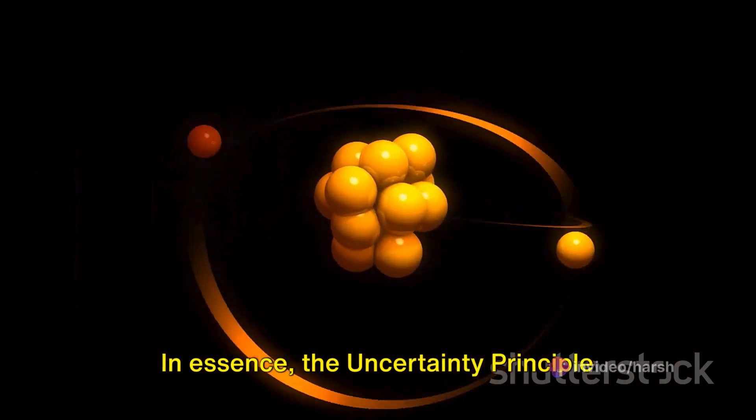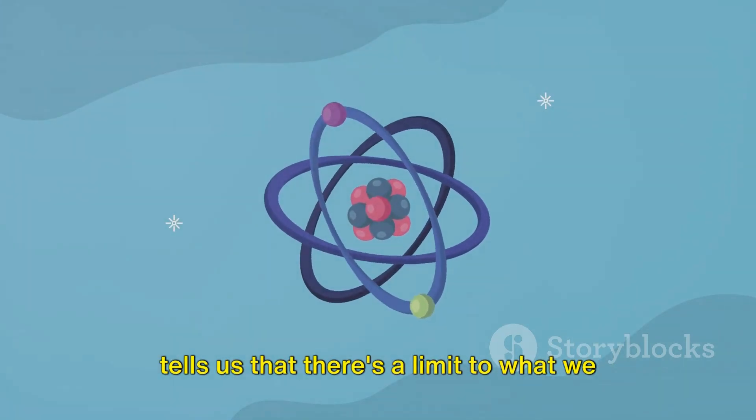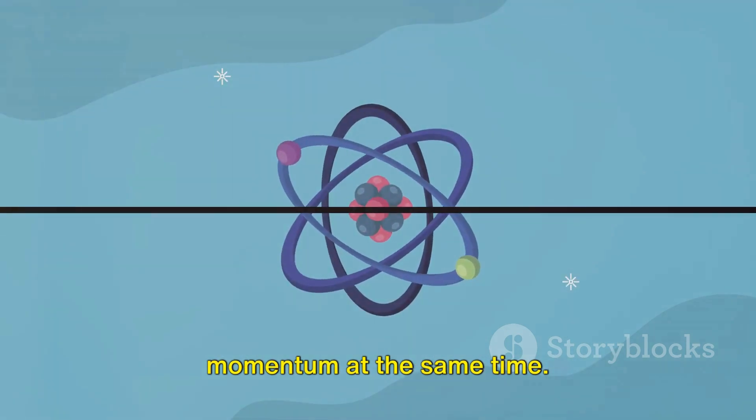In essence, the uncertainty principle tells us that there's a limit to what we can know about a particle's position and momentum at the same time.